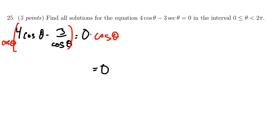On the right-hand side, you get 0. On the left-hand side, this is where you have to be careful, you're going to distribute this cosine onto each piece. You get cosine times 4 cosine, which is 4 cosine squared. And then you're going to get negative 3 over cosine times cosine. Those cosines would cancel out, and you end up with just a negative 3.